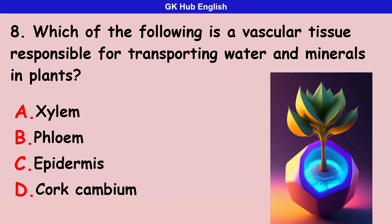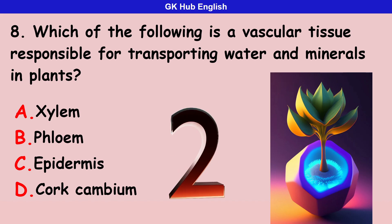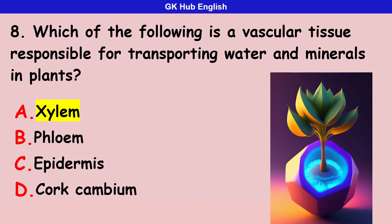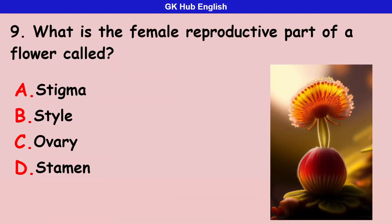Option D is cork cambium. Correct answer is xylem. Ninth question is,